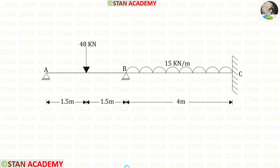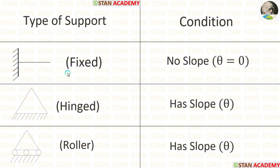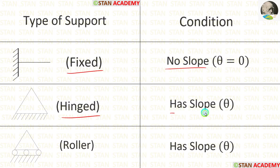In the stiffness matrix method we have to check the number of supports at which slope can occur. In a fixed support there will be no slope. In a hinged support there will be slope, and in a roller support there will also be slope.